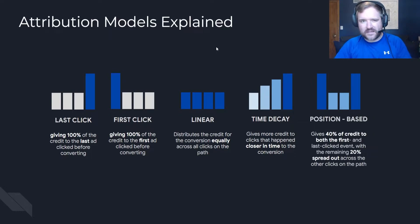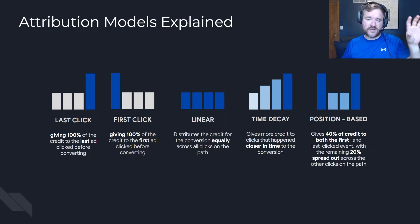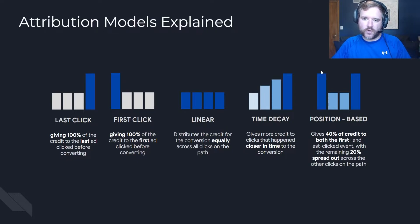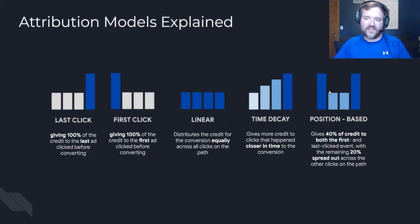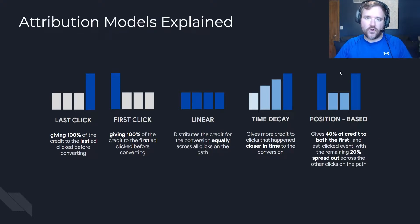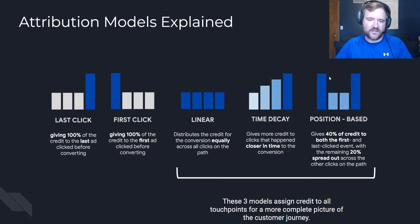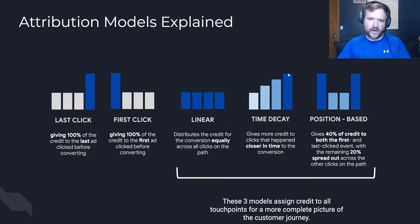You've then got position-based attribution modeling, which tries to give you the best of both worlds. It assigns equal credit to the first and to the last touchpoint, and then equally distributes the remaining credit in the middle. In this example, if there were four touchpoints, you would receive 40% on the first touchpoint, 40% on the last touchpoint, and 10% each in the middle. It gives the most to the first and the last, and then equally distributes the rest. The benefit of these multi-touch models is that credit is being assigned to the journey versus going all in on one touchpoint.